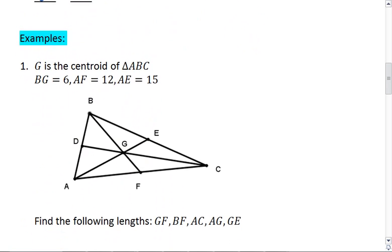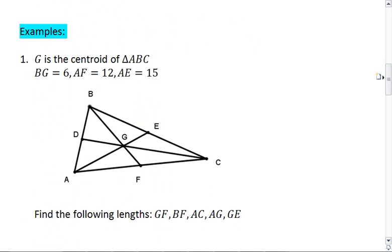Let's look at some examples. Below you're given triangle ABC where G is the centroid. You're told that BG is 6, AF is 12, and AE is 15.